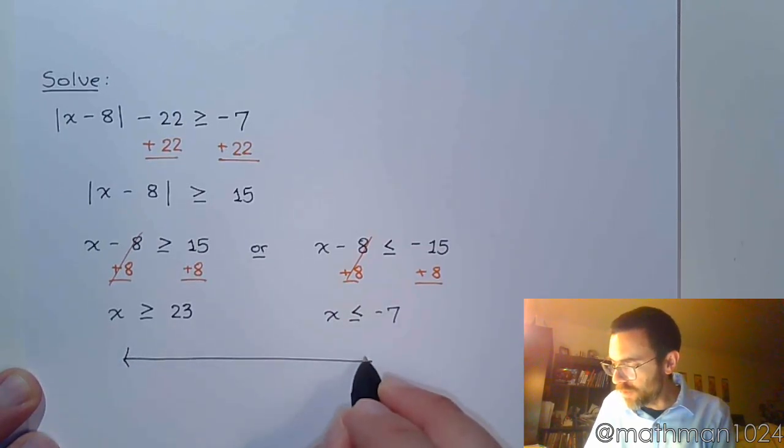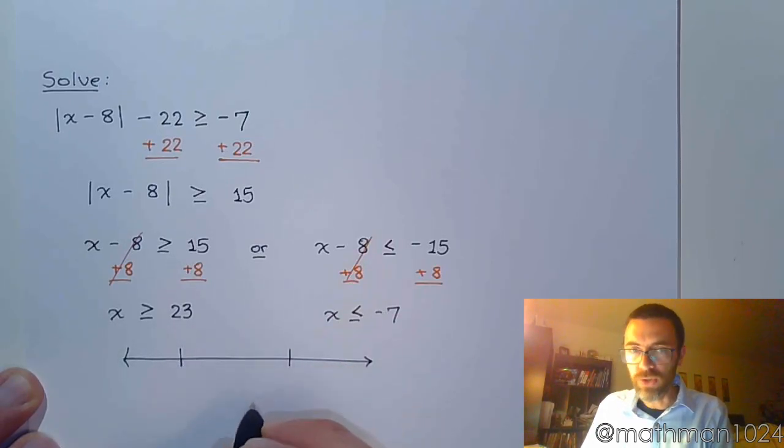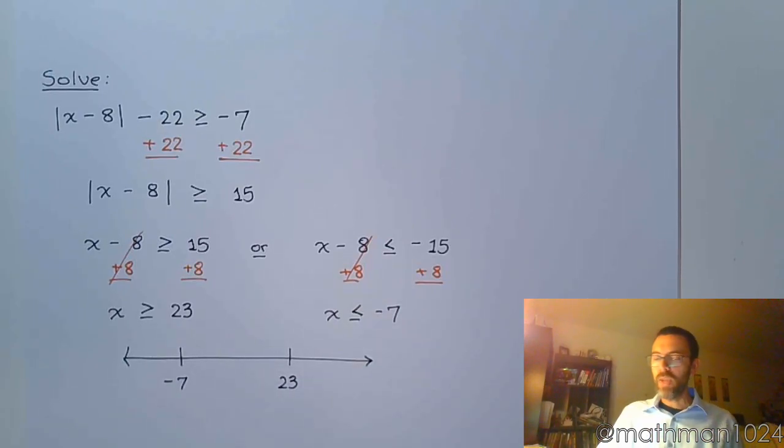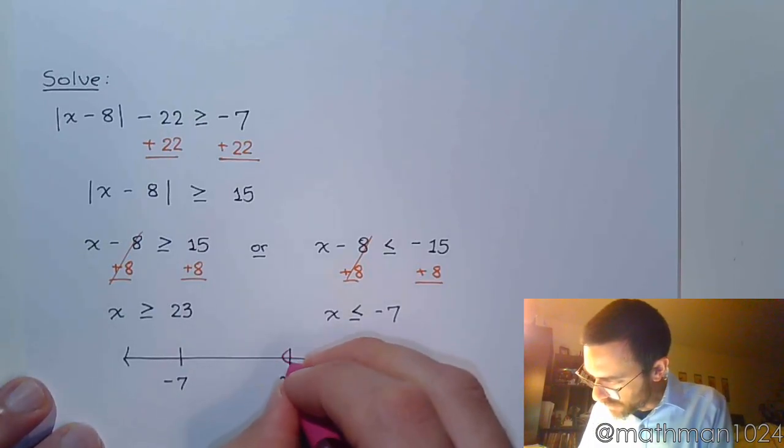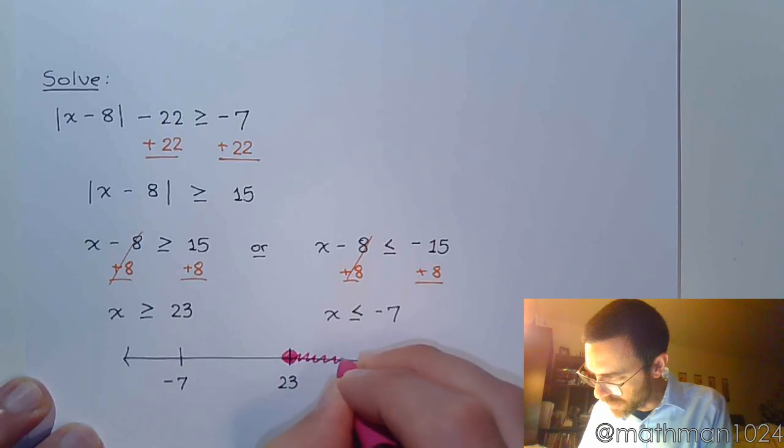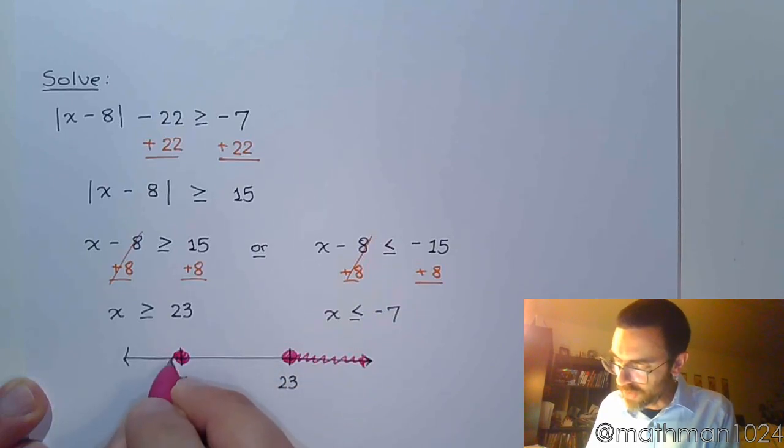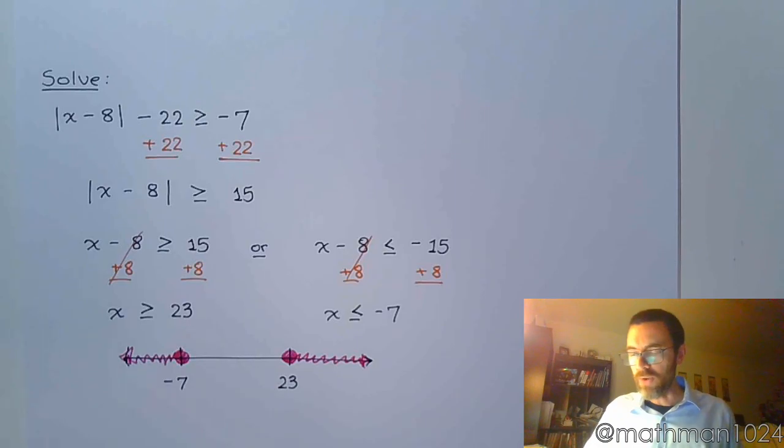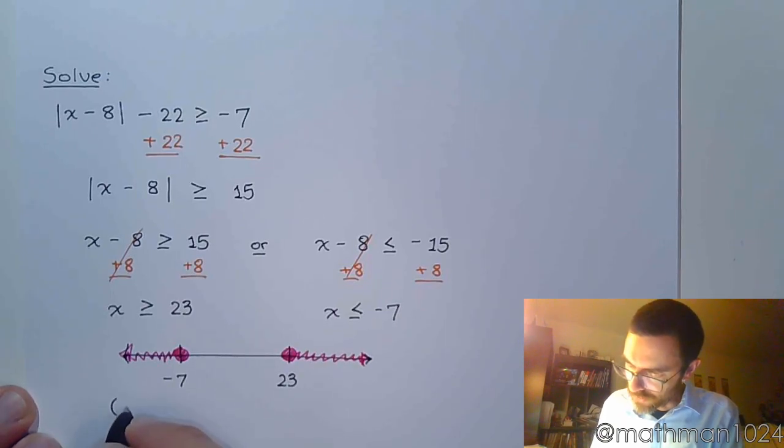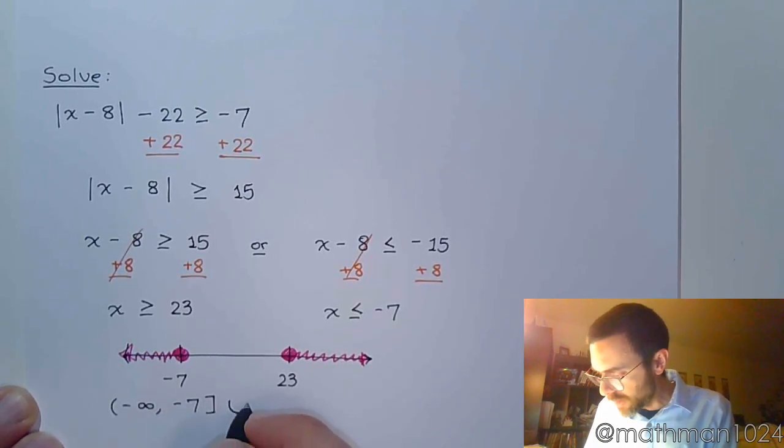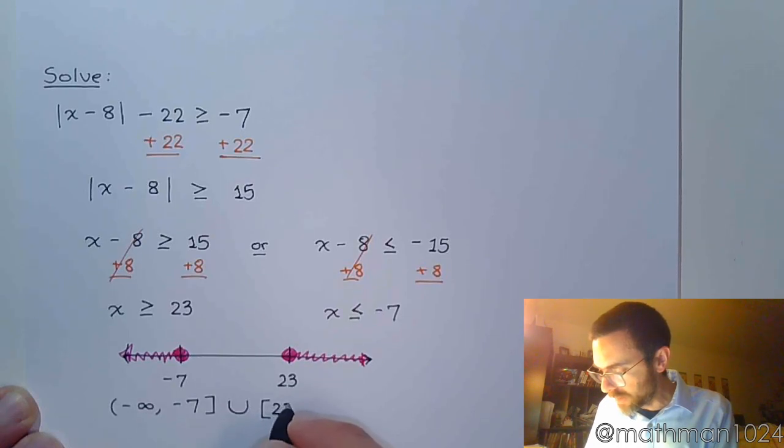Now, I want to put this on a number line just so we know exactly what we're doing. Pay attention to the order. This is negative 7 on the left and 23 on the right. So greater than or equal to 23 is closed at 23 going to the right. And then less than or equal to negative 7 is closed at negative 7 going to the left. So these guys are going in opposite directions like we expected. And it will just translate this into interval notation. So this is from negative infinity to negative 7 with a bracket union bracket 23 to infinity.